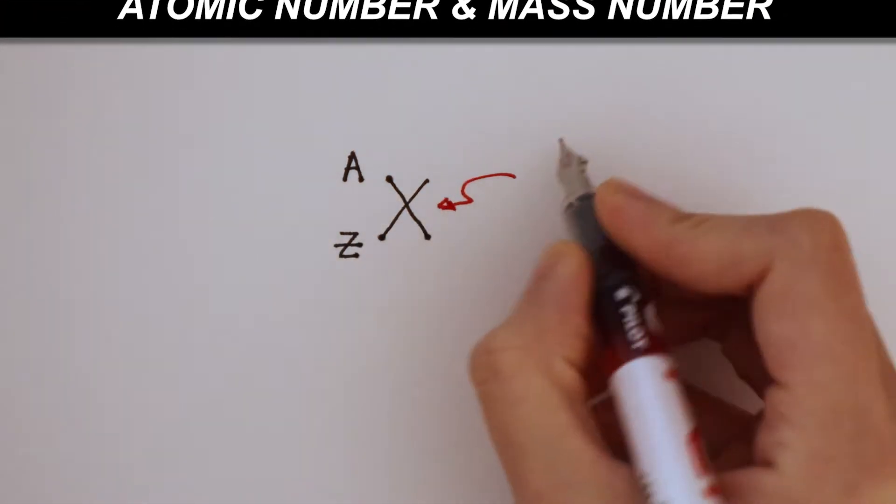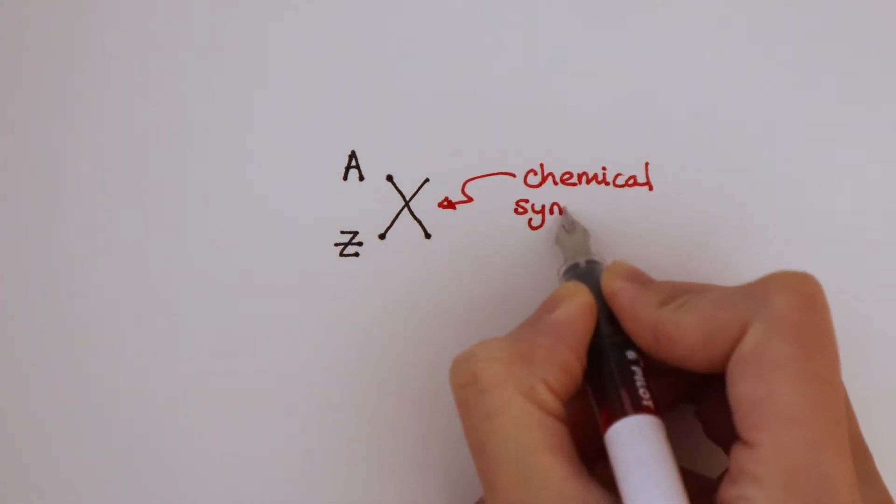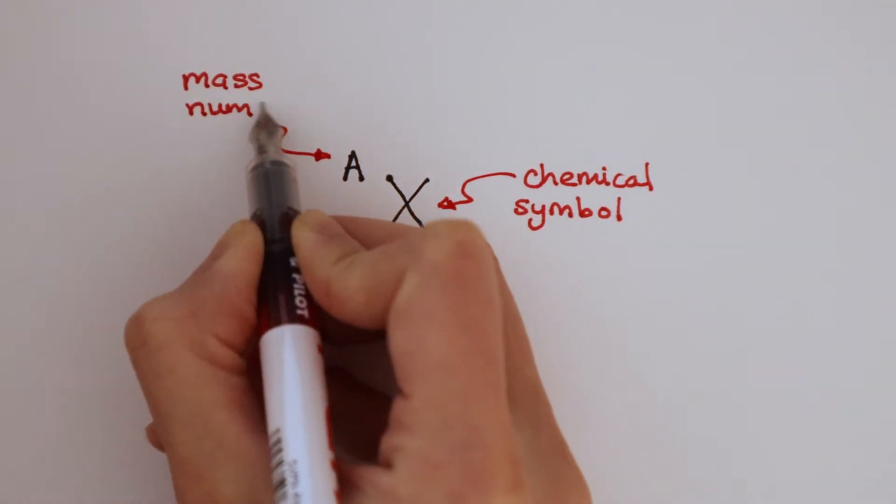An element can be represented using its chemical symbol, its mass number, and its atomic number.